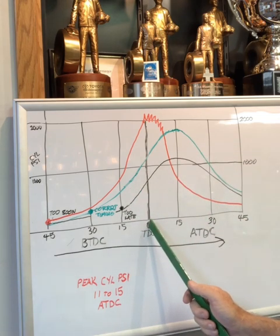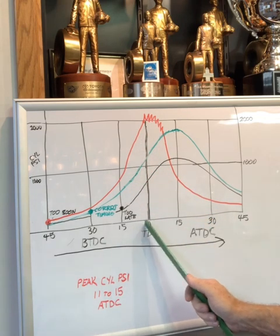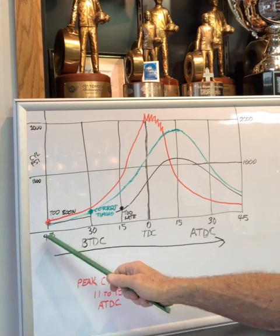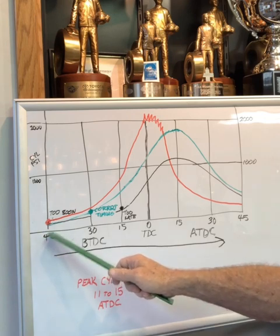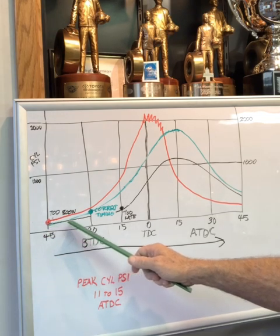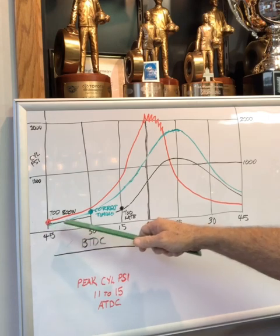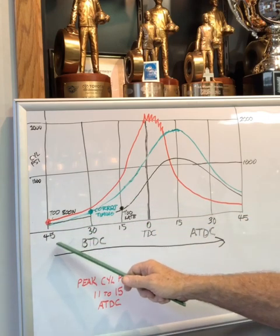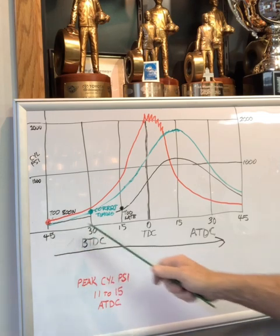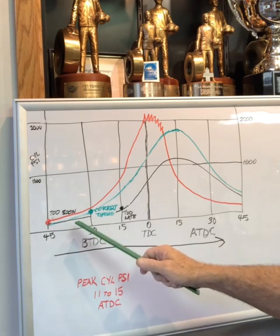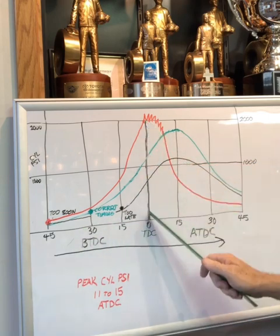At TDC, when the piston's all the way at the top, we can advance the timing to where we light the spark plug too soon. If we light it at 45 degrees on 89 or 91 octane gasoline, we can build up cylinder pressure while the piston's going up for TDC after we light the spark plug. Think about it, we're lighting the spark plug before TDC. 15 degrees before, 30 degrees before, 45 - we have to light the spark plug early in order for us to get peak cylinder pressure after TDC.